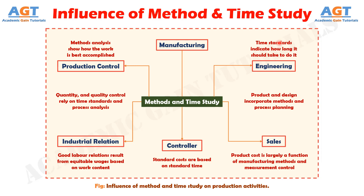Methods analysis guides with respect to how the work is to be best accomplished, and time standards indicate how long it will take to complete the job. Process analysis and standard times help to have control on quality and quantity manufactured. Based upon the standard times, standard costs are determined, and this helps the analysis of variance between actual and standard costs. Product cost, which is a function of method and standard time, and cost control is very much essential to be in competition.